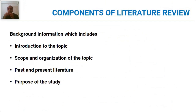These are the components of the literature review: introduction to the topic, scope and organization of the topic, past and present literature, and research gap identification or purpose of the study. All four have to be done in a systematic manner — only then it reflects that you have understood what you are doing.